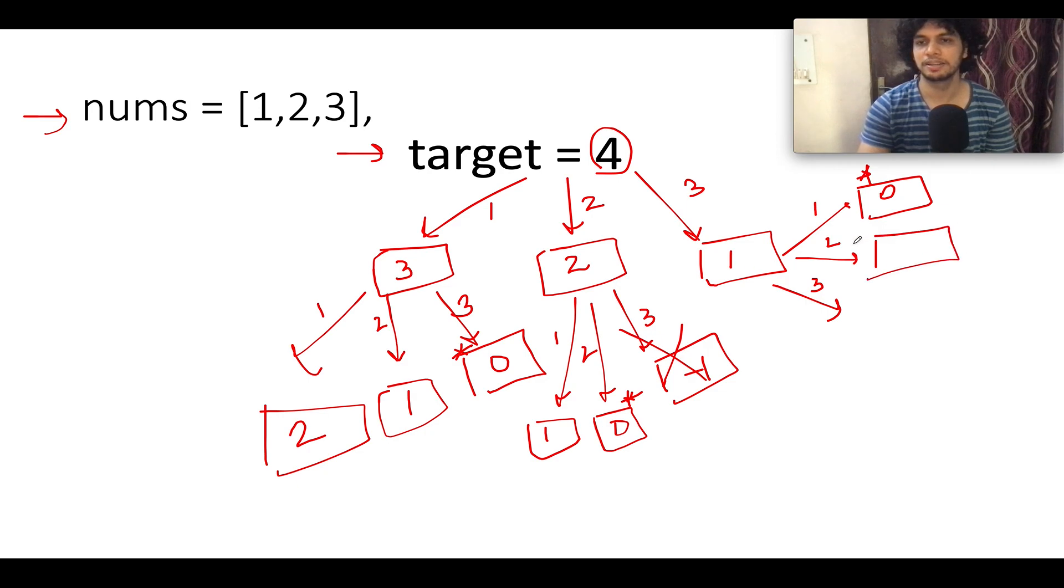Next will be 1 minus 2 gives you minus 1. So let's reject the entire branch. And next, we'll have 1 minus 3. That gives you minus 2. Let's simply reject the entire branch. We'll not do any further processing on it. We still have numbers that are greater than 0. So we will continue the similar kind of an operation across these numbers.